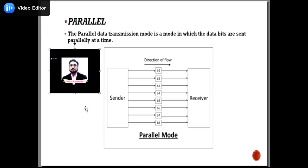With N-bit transmission, the complexity of the network increases. Advantages of parallel mode: easy to program or implement, and data transmission speed is high. Disadvantages: more transmission channels are required, hence cost is higher, and there can be interference between data bits.